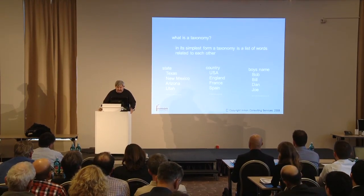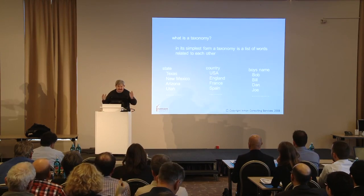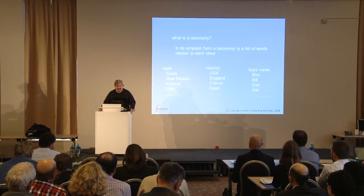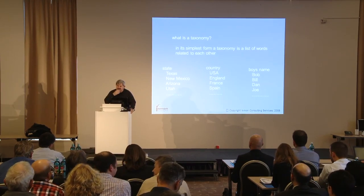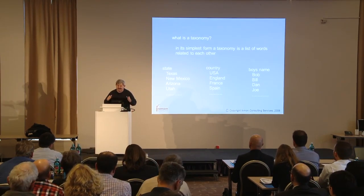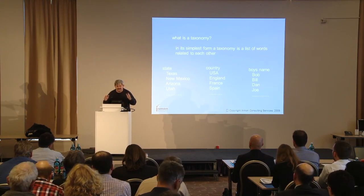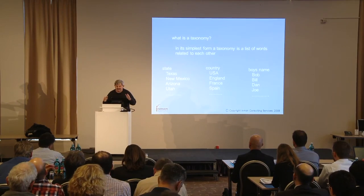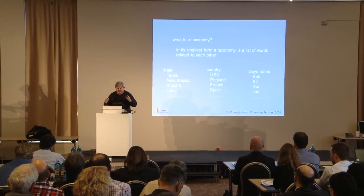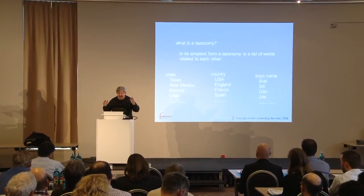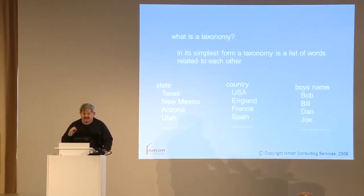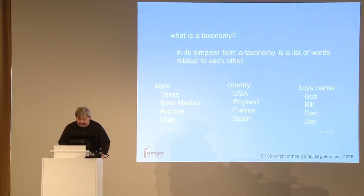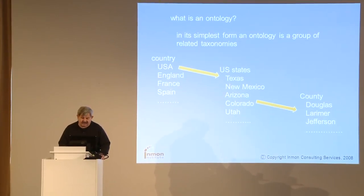Boys' names: Bob, Bill, Dan, Joe, Hans, Steve, and so forth. These are all simple taxonomies. There are an almost infinite number of ways of creating related lists of words. For sure there are a lot of ways in which we can create taxonomies. Some of them are going to be appropriate, some are not, and we'll talk about that appropriateness.